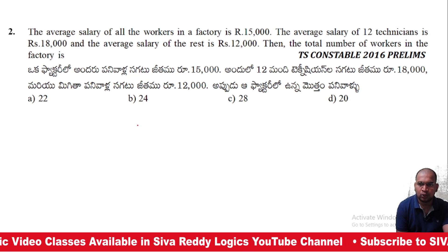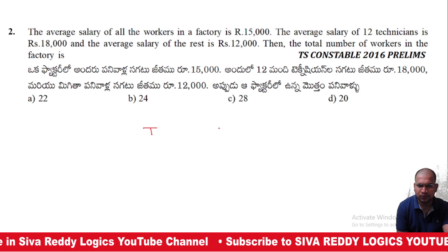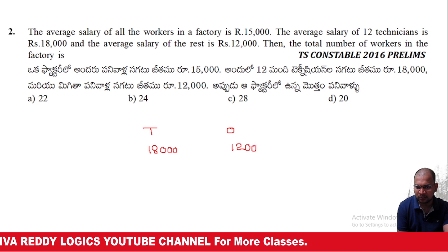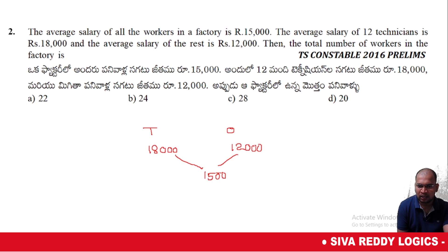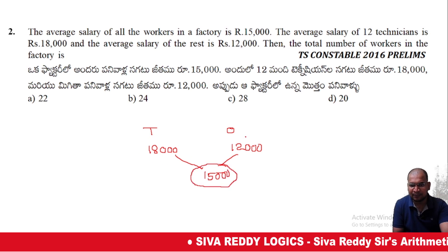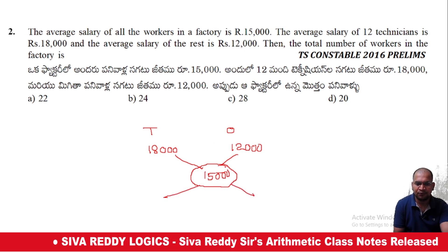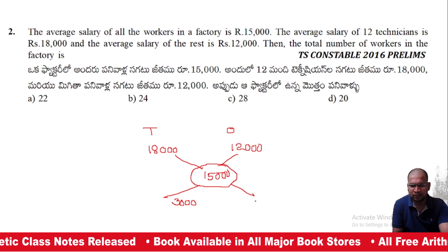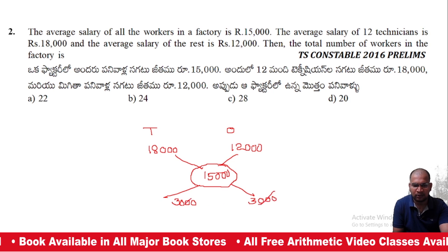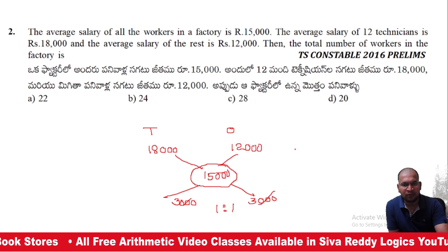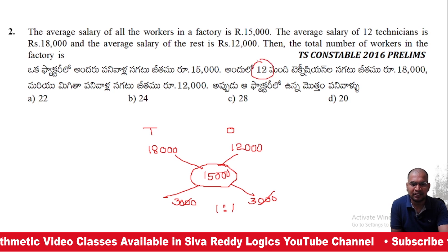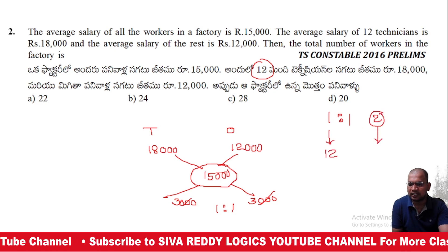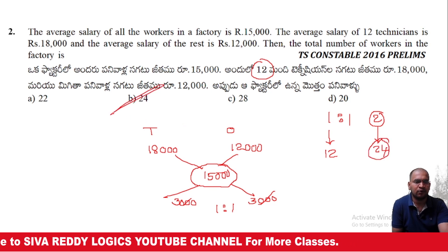Technicians earn 18,000 per month and other employees earn 12,000 per month. The overall average is 15,000. The difference: 15,000 − 12,000 = 3,000 and 18,000 − 15,000 = 3,000. The ratio is 1:1, meaning there are 12 other employees. Total workers = 24, so Option B is the right answer.